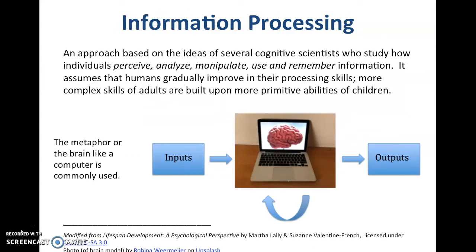Information processing is an approach to understanding cognitive development whereby cognitive scientists study how individuals perceive, analyze, manipulate, use, and remember information. The idea is that we improve our skills rather than gaining entirely new ones. If you've ever heard the brain likened to a computer, that's likely information processing — we know inputs and outputs, and we try to determine what happens in between.